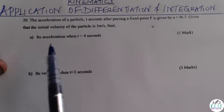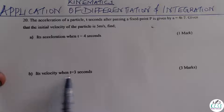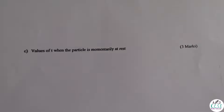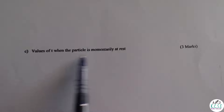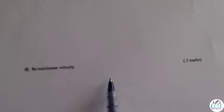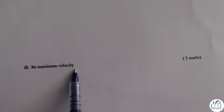Find: A, its acceleration when t equals 4 seconds — one mark. B, its velocity when t equals 3 seconds — 3 marks. C, values of t when the particle is momentarily at rest — 3 marks. And the last one, its maximum velocity — 3 marks.